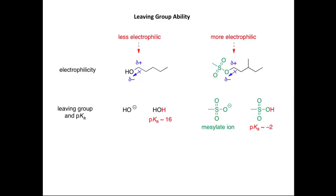One way to assess whether a group is a good leaving group is to look at the pKa values of the conjugate acids. Here we compare the pKa of water — the conjugate acid of hydroxide ion — with the pKa of methanesulfonic acid, the conjugate acid of the mesylate ion. Methanesulfonic acid is a much stronger acid than water, so it is much more likely to lose a proton to form the anion, meaning that the mesylate anion must be more stable than the hydroxide ion.